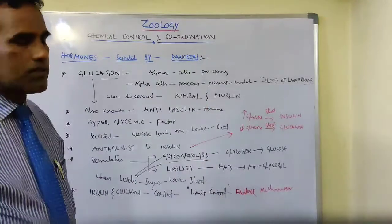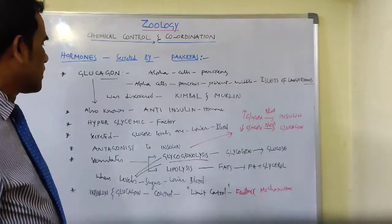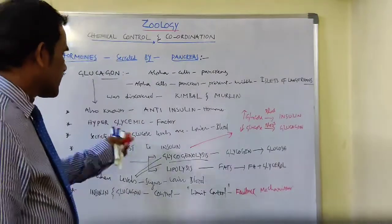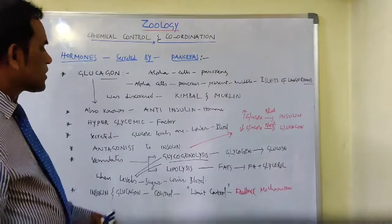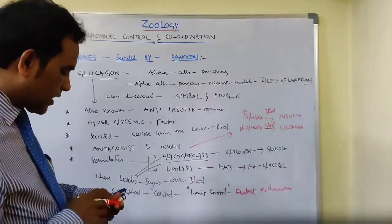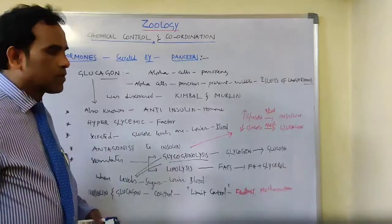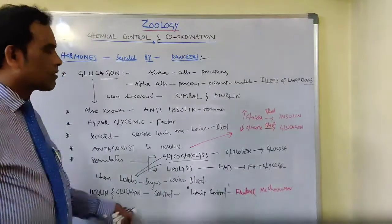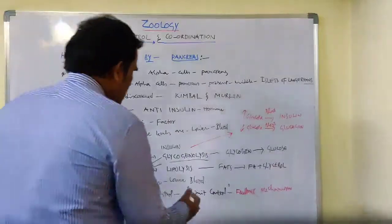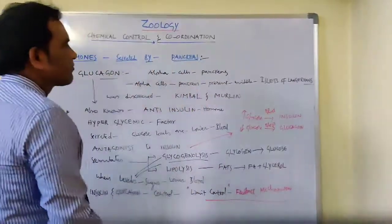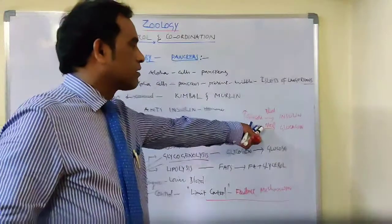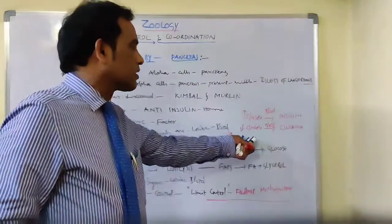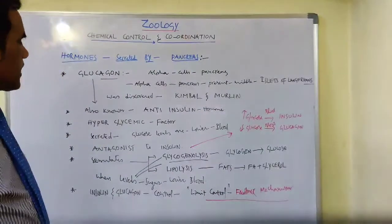To summarize: glucagon is secreted by alpha cells of the pancreas. It is a hyperglycemic factor, commonly known as anti-insulin, and is antagonistic to insulin. It stimulates glycogenolysis — conversion of glycogen into glucose — and lipolysis — conversion of fats into fatty acids and glycerol. Insulin and glucagon are controlled by a feedback mechanism: when glucose is high, insulin is secreted; when glucose decreases, glucagon is released from alpha cells of the pancreas.